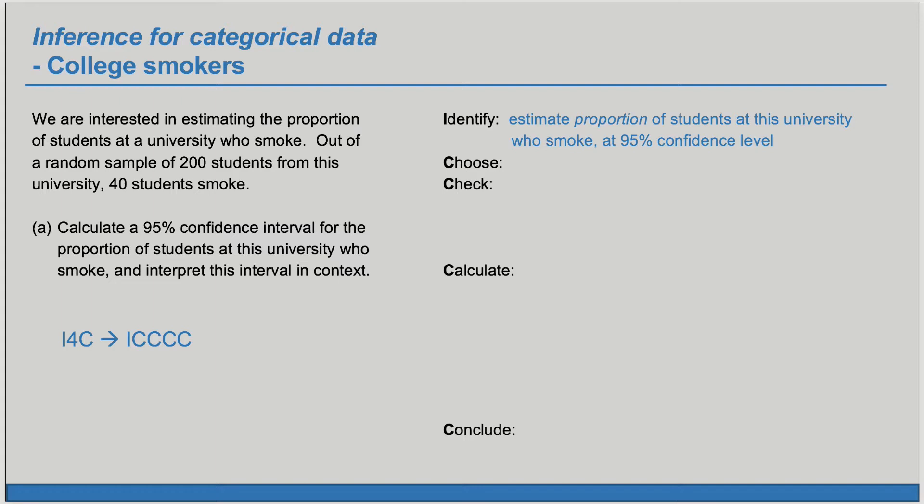Next we want to choose the correct confidence interval procedure. Because we have a proportion and we have one random sample, we're going to do a one proportion Z interval.